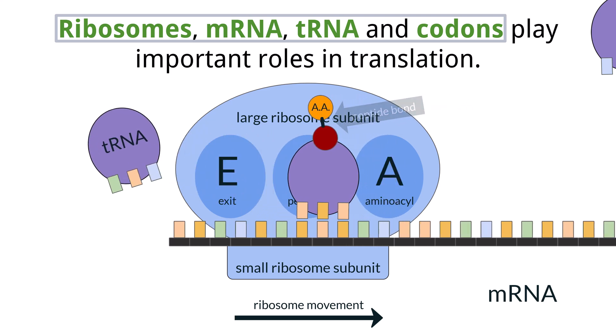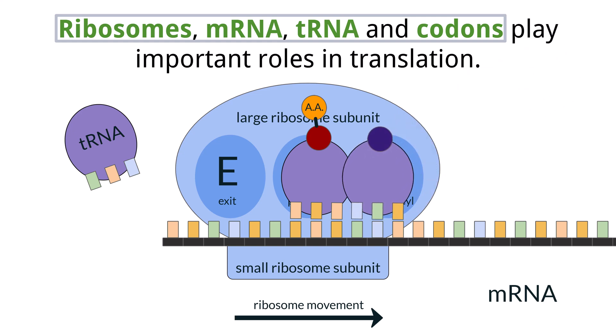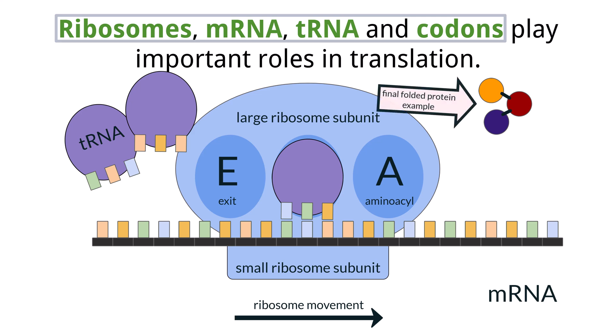The ribosome will shift again, kicking out the first tRNA molecule that has given up the amino acid. The polypeptide chain will shift to the open P site, and when the new tRNA molecule comes in to attach to the next codon at the A site, the complete amino acid chain is linked to the new one, again forming another peptide bond between the amino acids connected to both tRNA molecules. This process continues until a stop codon is reached, which will allow the final protein structure to detach and fold into its final form to perform the function that it was designed for.